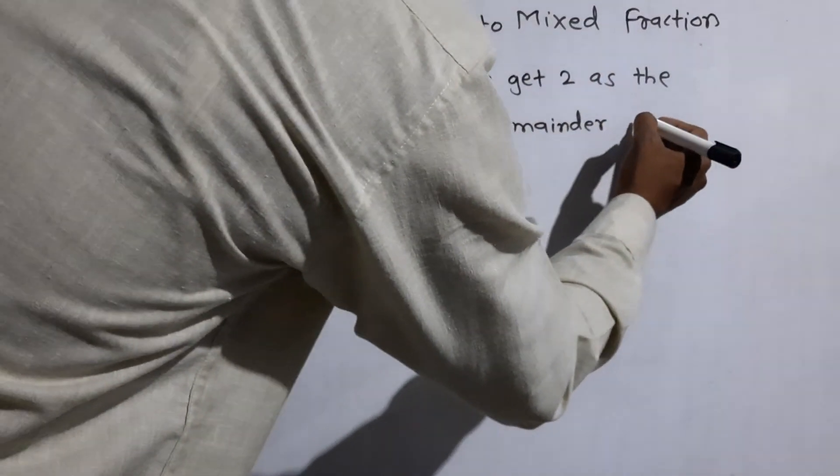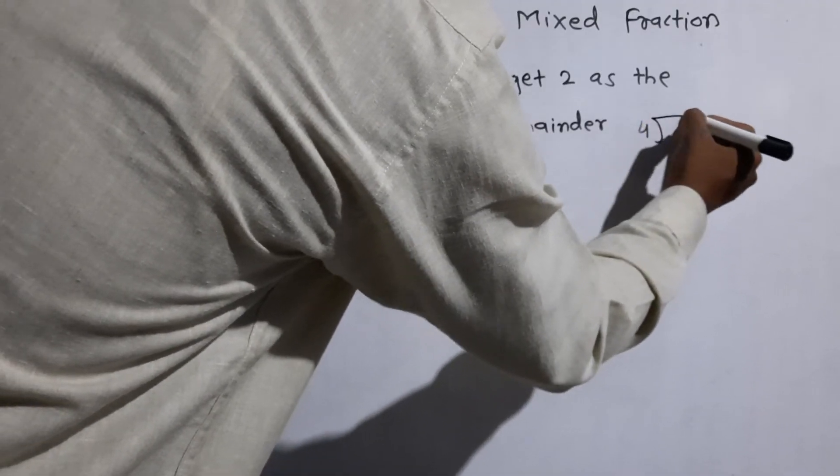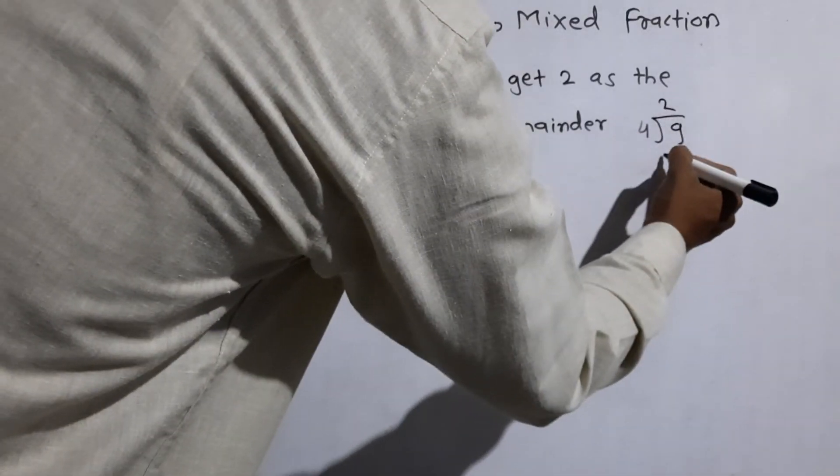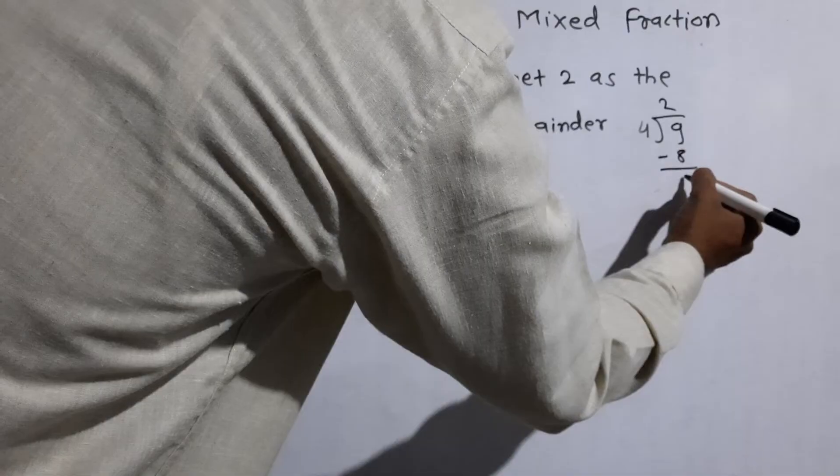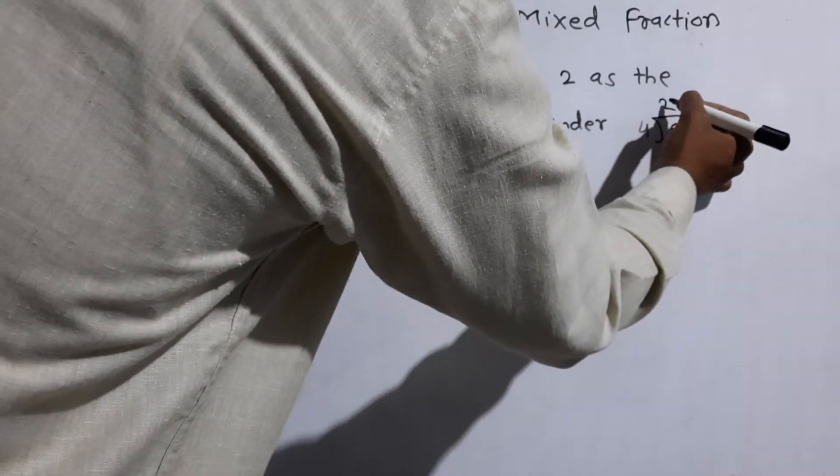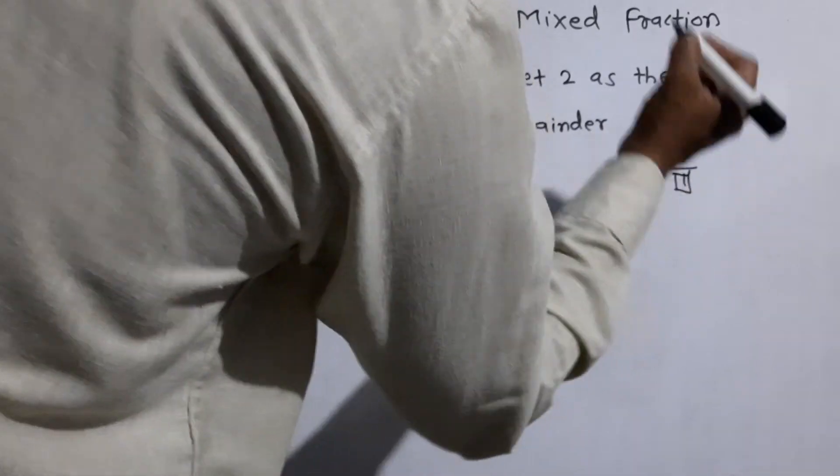Look here. 4 into 9. 4 twos are 8. 9 minus 8 is 1. Quotient is 2, remainder is 1.